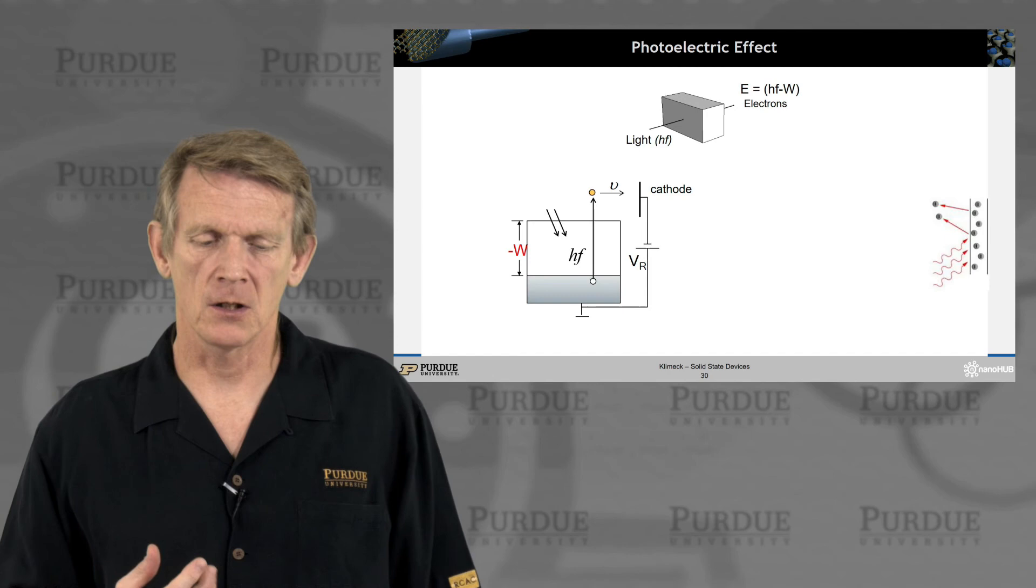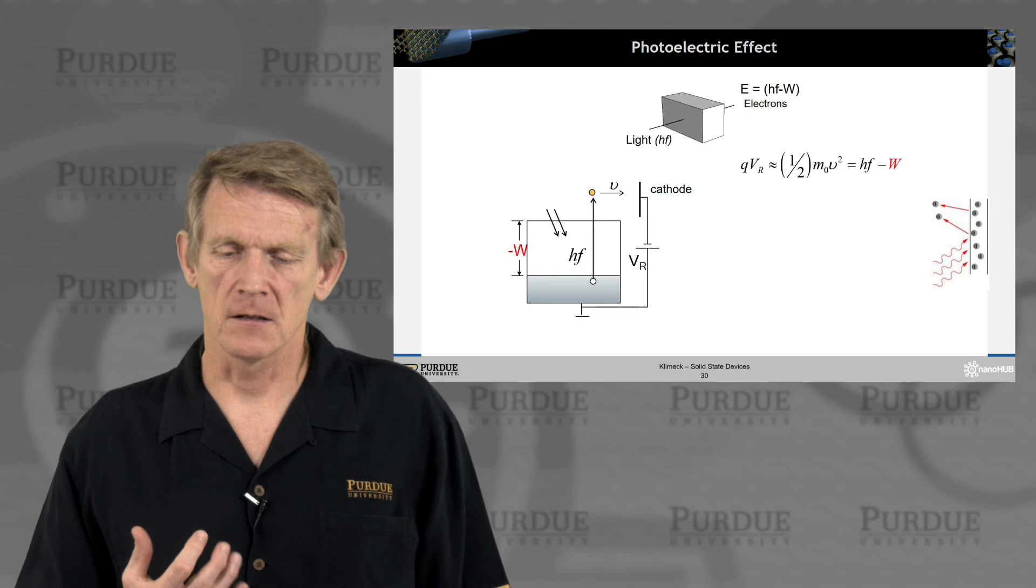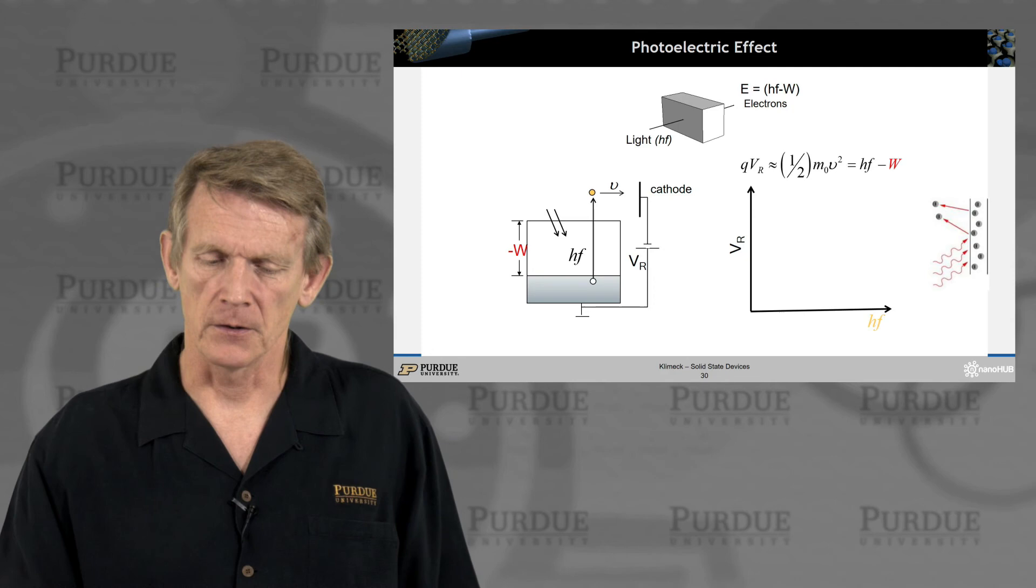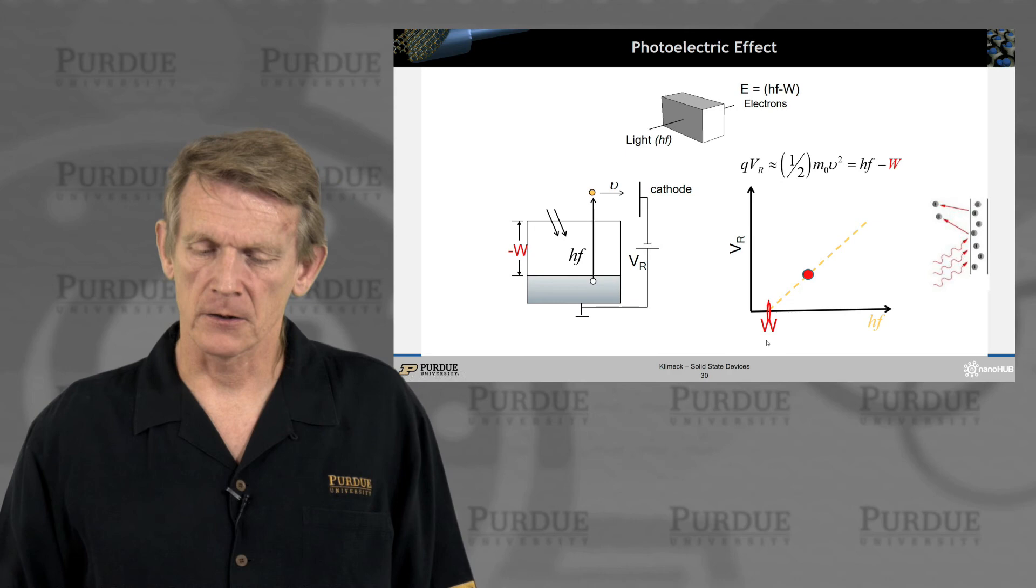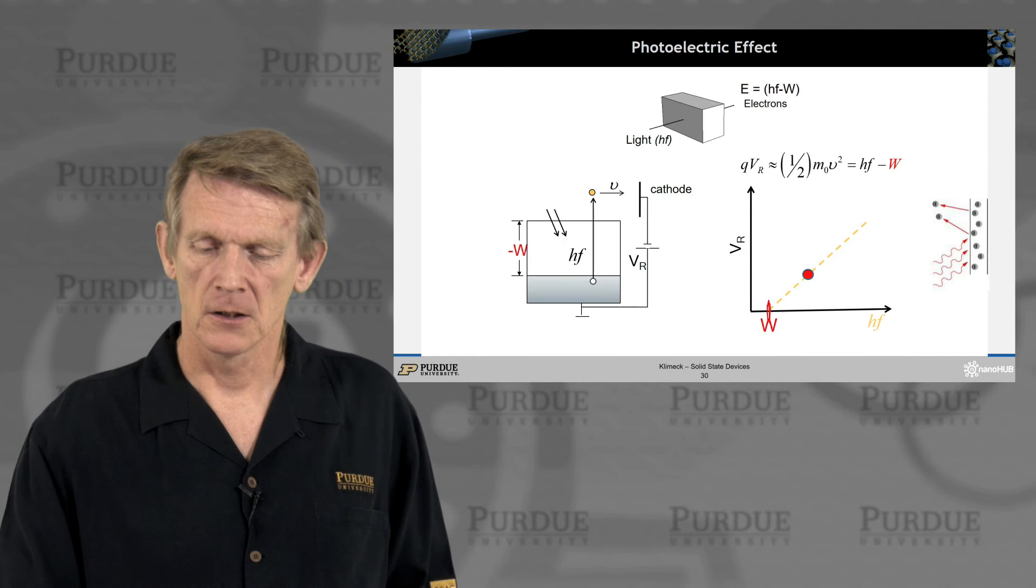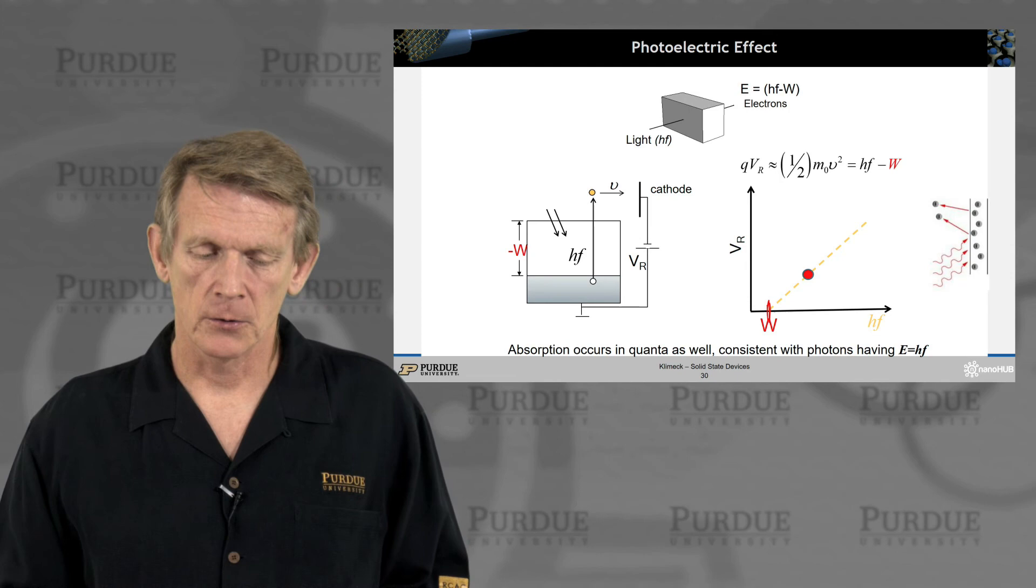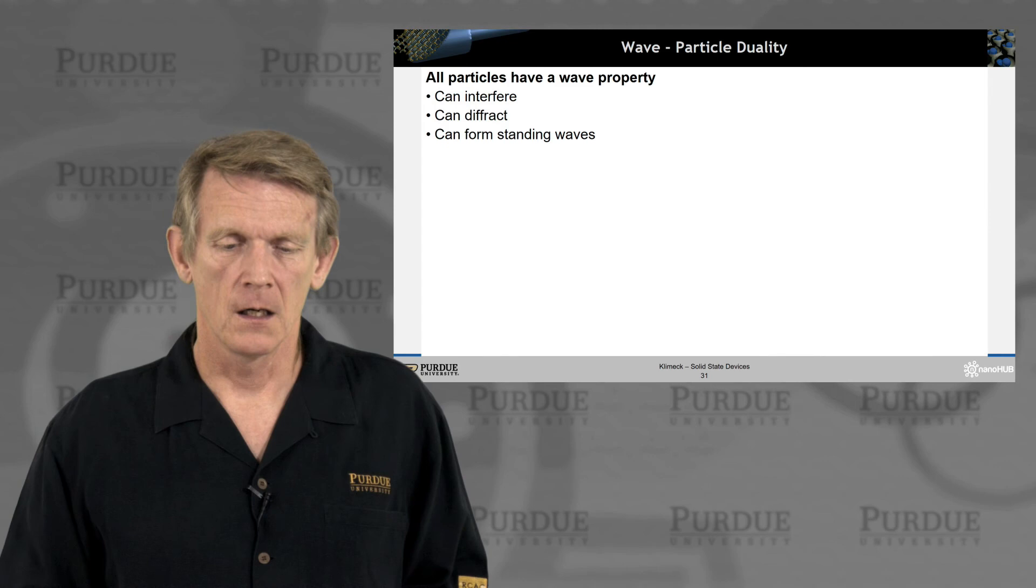All right. So the experimental setup is that these electrons are being caught on a cathode, and one can measure the velocity or the energy of these electrons. And the interesting thing is that there's a cutoff below which frequency there are no electrons coming out. So that's the experimental observation, and then the intensity goes up with the frequency. Okay. So the absorption occurs in quanta and is consistent with photons.